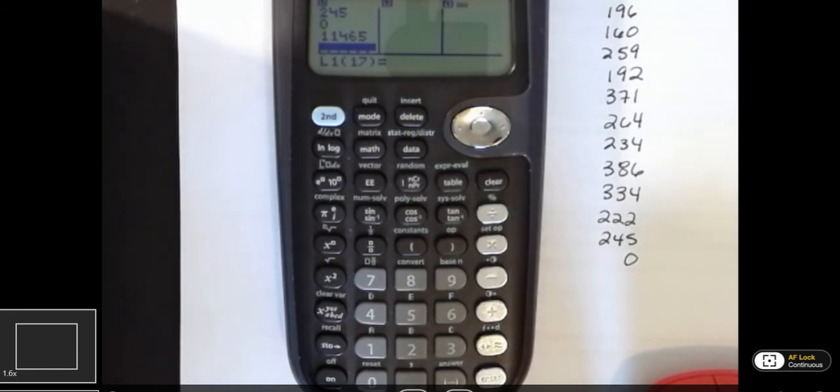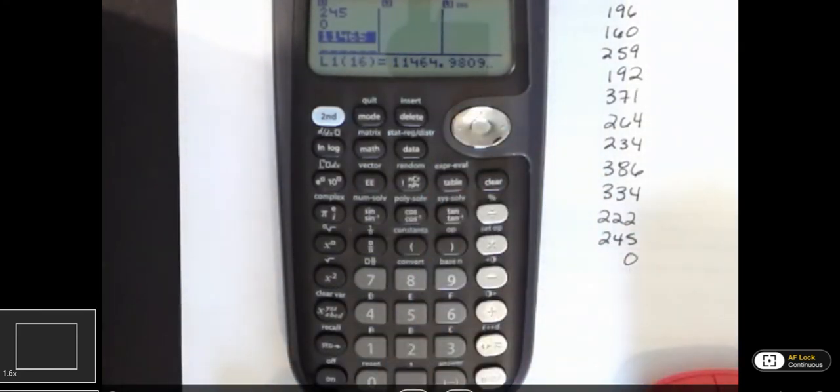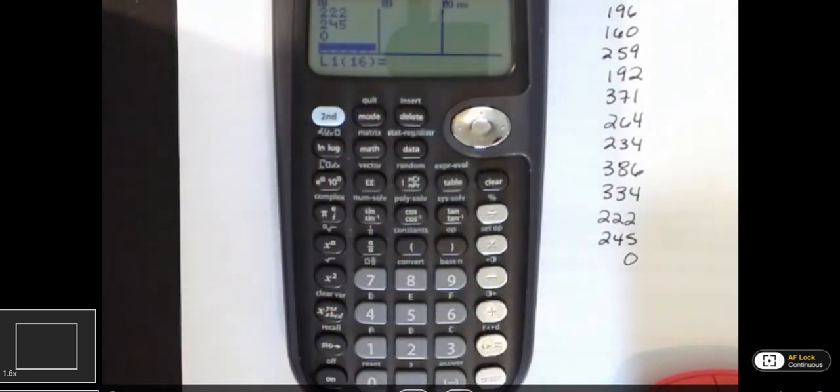If you didn't want that in there, all you'd have to do is scroll back up to that data value and hit delete right here. And that's going to delete that data value and take it back out of there. But you can find variance very easily that way.